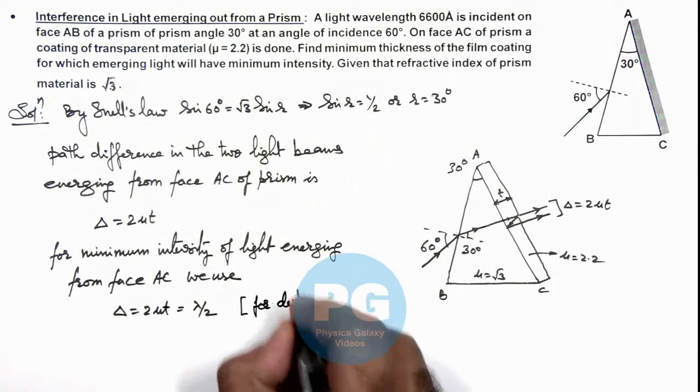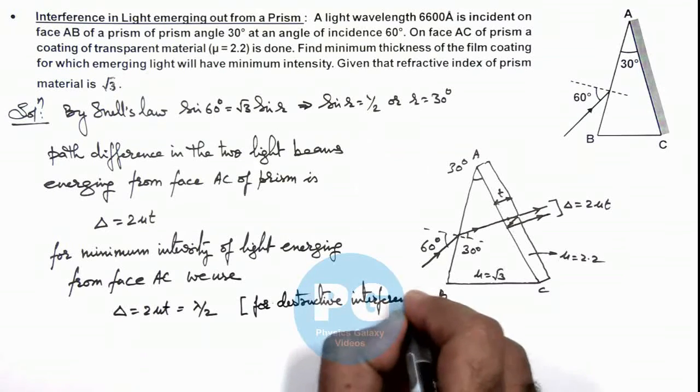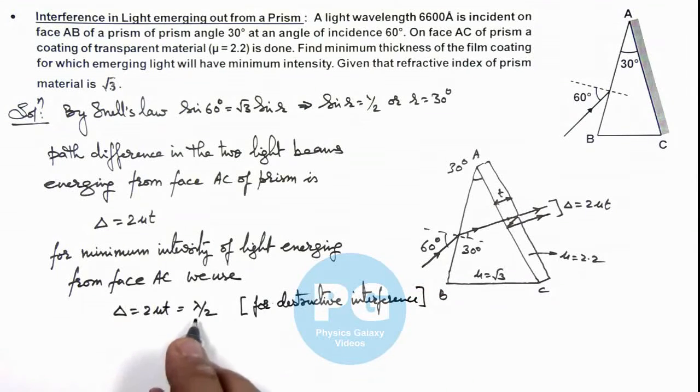So for destructive interference of these two light beams, we must take their path difference to be lambda by 2. So this gives the thickness of film as lambda by 4 mu.